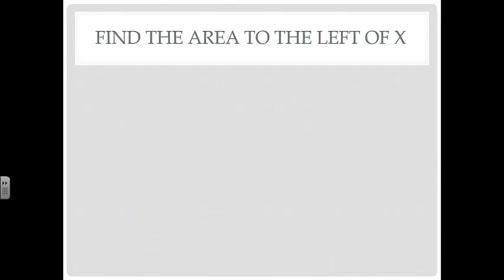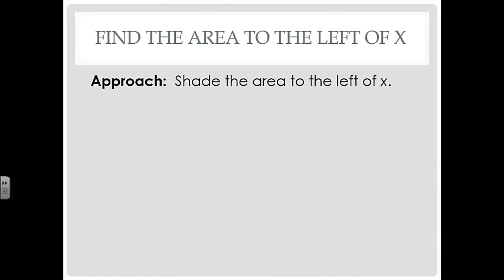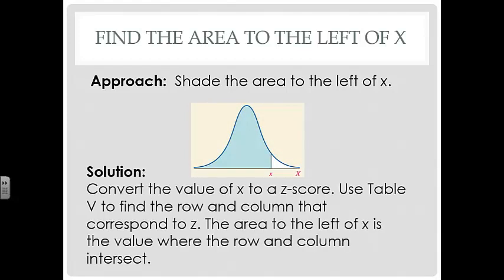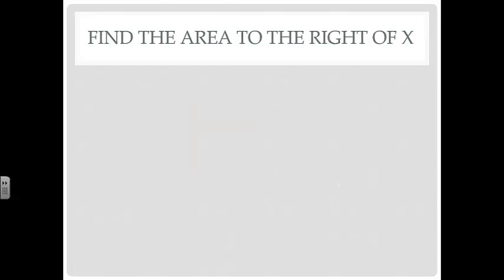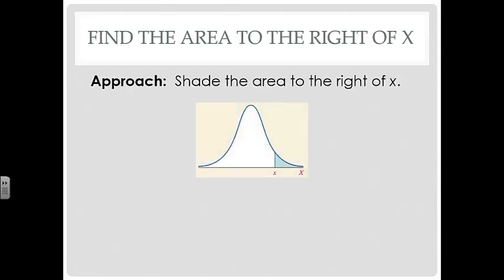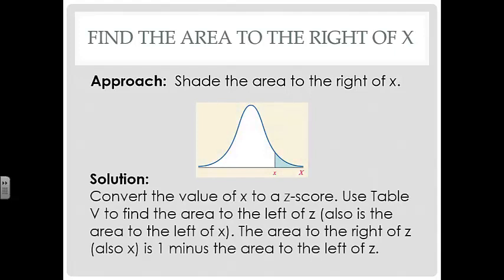To find the area to the left of X, shade the area to the left, convert X to a Z-score, then use the table. To find the area to the right of X, shade the area to the right, convert to a Z-score, then subtract that table value from 1 in order to get the area above that Z-score.